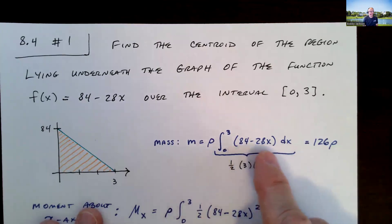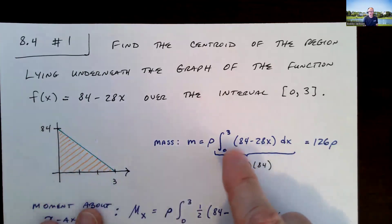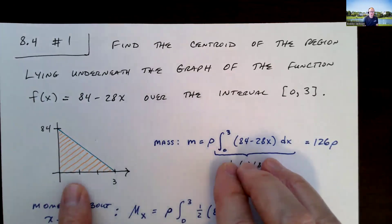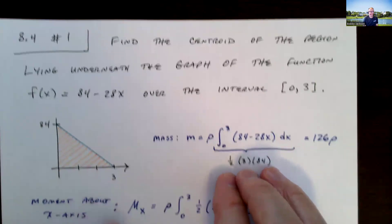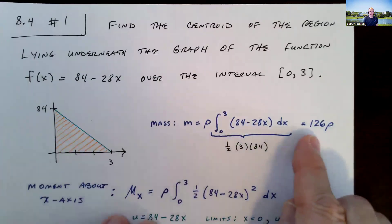So let's take a look at finding this area. We're going to integrate the function 84 minus 28x over the interval from 0 to 3. We can use calculus, find the antiderivative, and use the fundamental theorem of calculus. But this is a triangle. We know the area is one half base times height. Since that's a 90 degree angle here, the base is 3 units, the height is 84 units. I can go right to it, and this is 126 times the density.